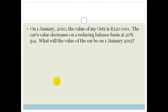So let's get started with our first example. It says, on the 1st of January 2010, the value of my Getz is R120,000. This car's value decreases on a reducing balance basis at 20% per annum. What will the value of the car be on the 1st of January 2015?